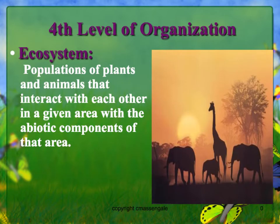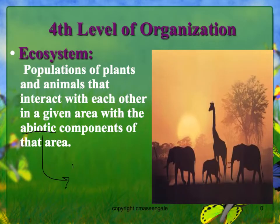An ecosystem is populations of both plants and animals that interact with each other in a given area, along with the abiotic components of that area as well. If you remember, abiotic means non-living things — things like rocks, air, sunlight, and water.